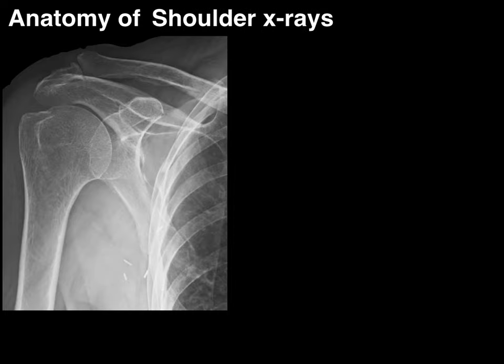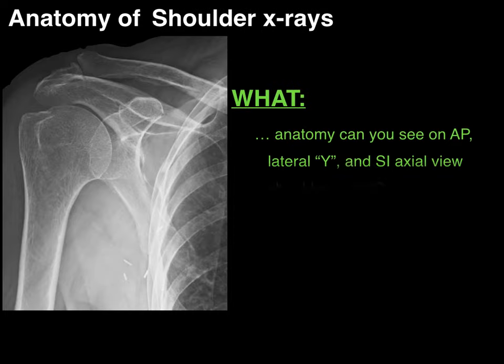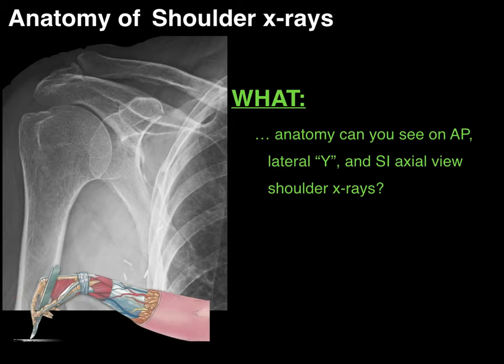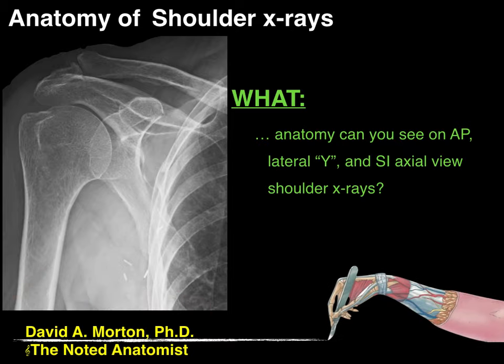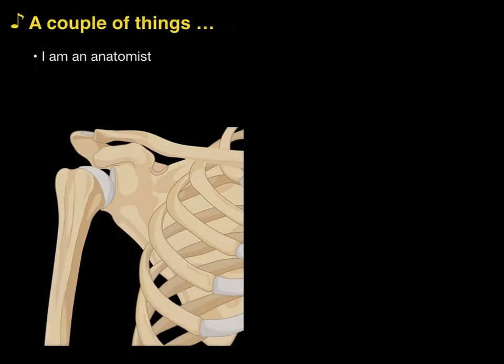We're going to talk about the anatomy of shoulder x-rays and answer the question: what anatomy can you see on an AP, lateral Y, and SI axial view of shoulder x-rays? My name is Dr. Morton and I'm the noted anatomist.